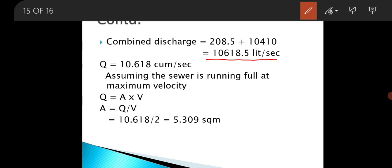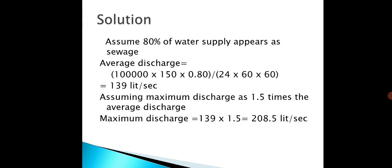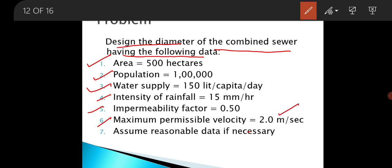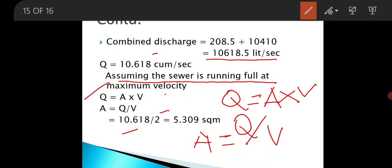In order to design the diameter of the sewer, we assume the sewer is running full. So quantity Q equals the cross-sectional area of the sewer multiplied by the permissible velocity. Therefore, area equals discharge divided by velocity. The discharge is 10.618 metre cube per second divided by the permissible velocity of 2 metre per second, which gives an area of 5.309 square metre.